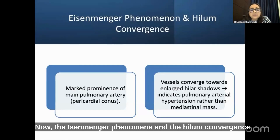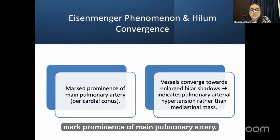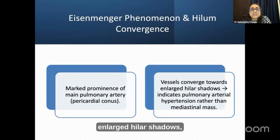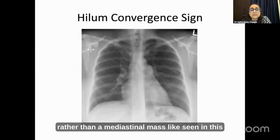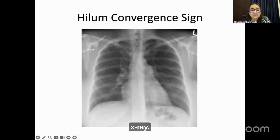The Palla's sign and the hilum convergence sign mark prominence of main pulmonary artery vessels when they converge towards enlarged hilar shadows. This indicates pulmonary arterial hypertension rather than a mediastinal mass.